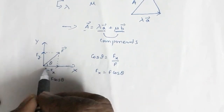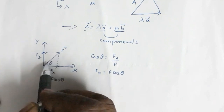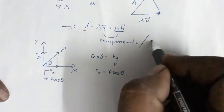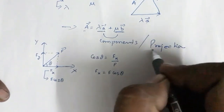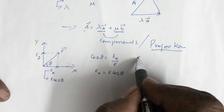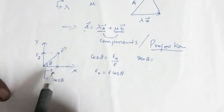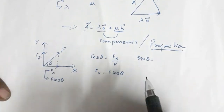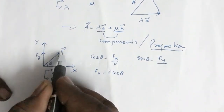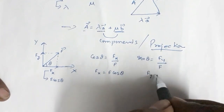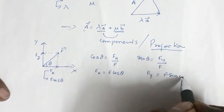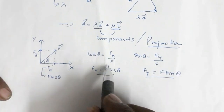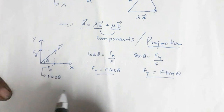So fx is the component of f along the x axis, and fy is the component of f along the y axis. A component is also called a projection — both terms mean the same thing. Similarly, in the same triangle, sin theta gives us fy. Since this is a rectangle, the opposite side equals fy, so sin theta is fy over f, which gives fy equal to f sin theta. So the two components of f are f cos theta along the x axis and f sin theta along the y axis.